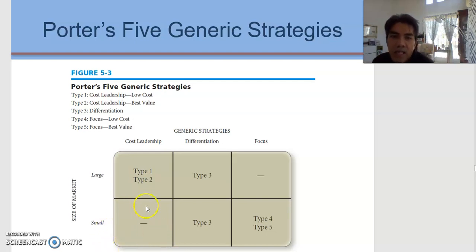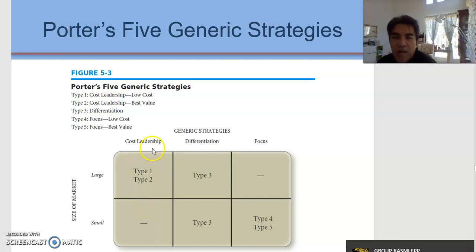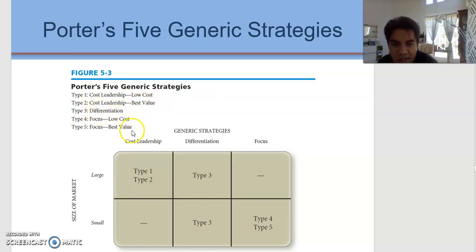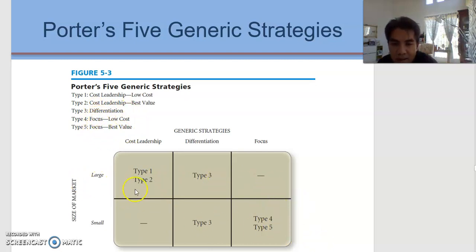All in all, there are three major types of strategies by Michael Porter. The first one is cost leadership. The second one is cost leadership best value. The third one is differentiation. And the last one is based on focus. We look at the different size of the market as well as the generic strategies.